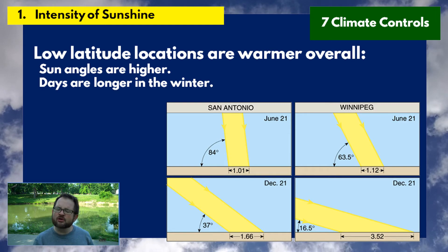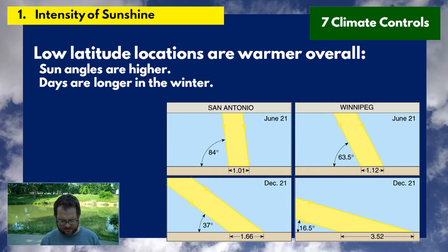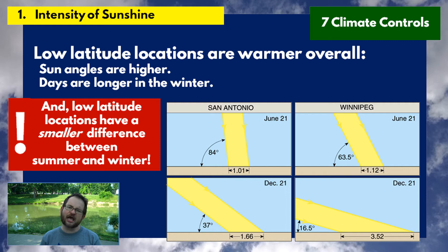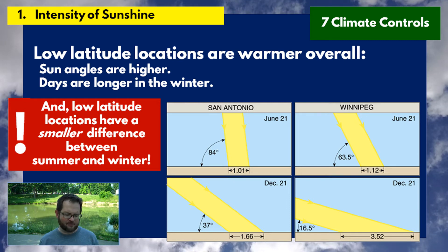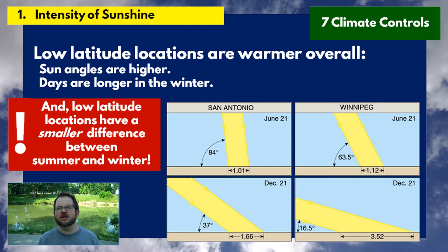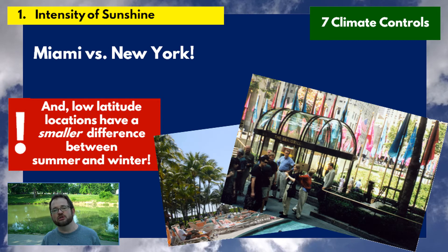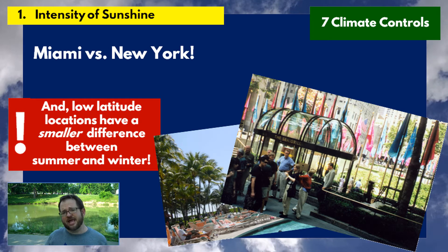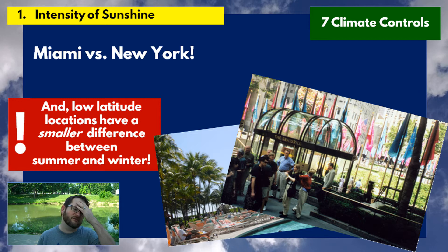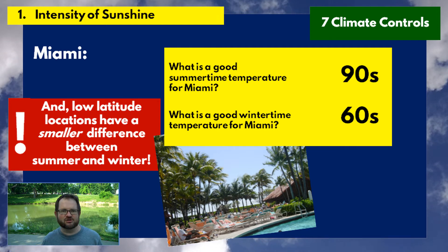There's a more interesting difference between low and high latitudes regarding climate: low latitude locations have a smaller difference between their winter and summer climates. To illustrate this, let's compare two cities in the United States. For this first climate control — intensity of sunshine — let's compare Miami to New York. What do we know from conventional wisdom about Miami? What's a good summertime temperature there?